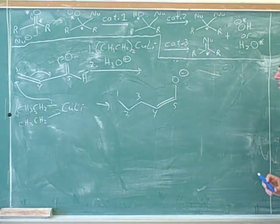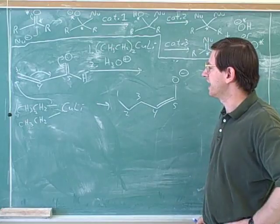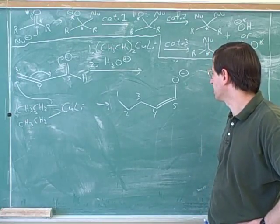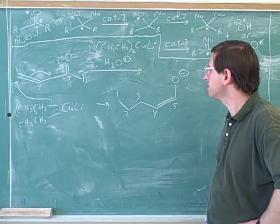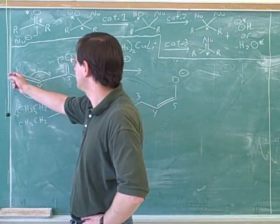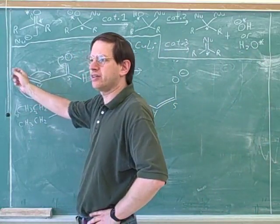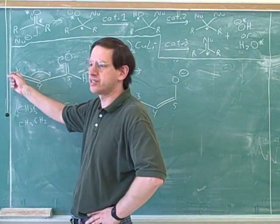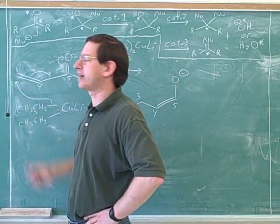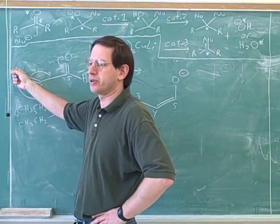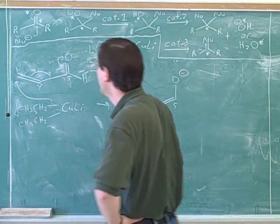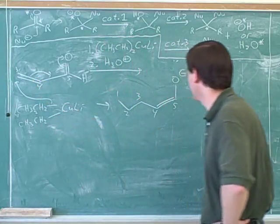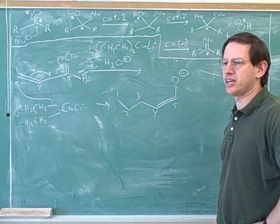That would give us an intermediate that looks like this. I'm putting in a lot of numbers here to make sure that I'm getting the connectivity right and not adding or dropping carbons. Why was it reasonable for the number three carbon here to be an electrophile? There's a resonance structure where there's a positive charge. We're not going to bother drawing that resonance structure, but it's important to remind ourselves what that reason is. We would not want to attack the number four carbon because it doesn't have a resonance structure where it has a positive charge.